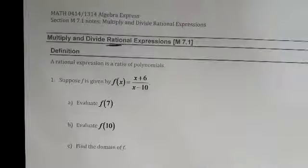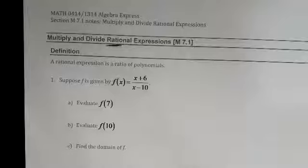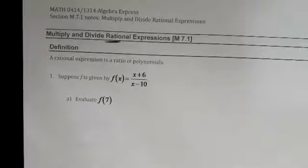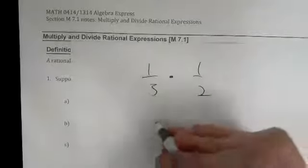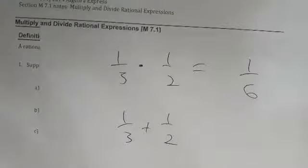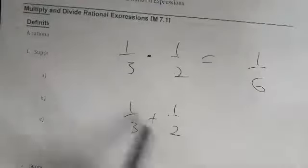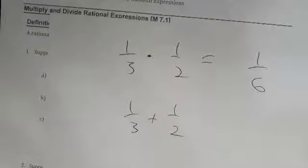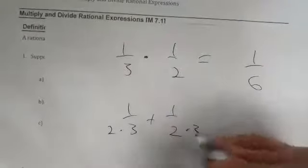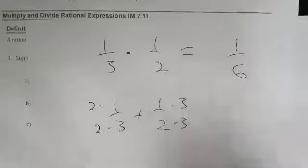We are going to be multiplying and dividing things that look like fractions. If we think about adding, subtracting, multiplying, dividing numbers, it's usually easier to add and subtract than multiply and divide. But with fractions, it's actually easier to multiply and divide than to add and subtract. For example, one-third times three-halves gives you one-sixth — just multiply numerator by numerator, denominator by denominator, and you're done. But if you add them, you have to find a common denominator. So in section 7.1 we will be multiplying and dividing, and in the next section we'll be adding and subtracting.